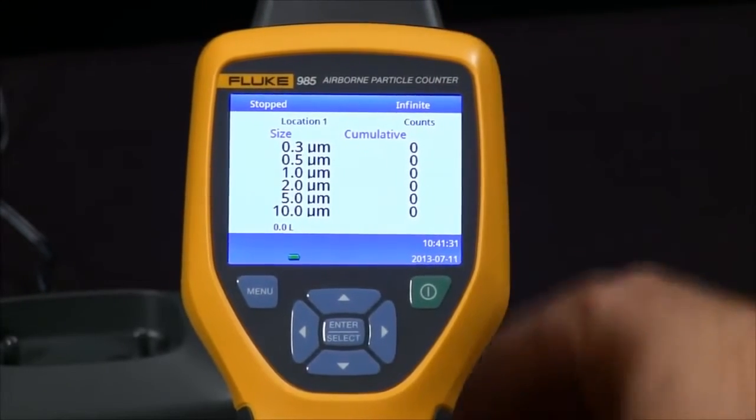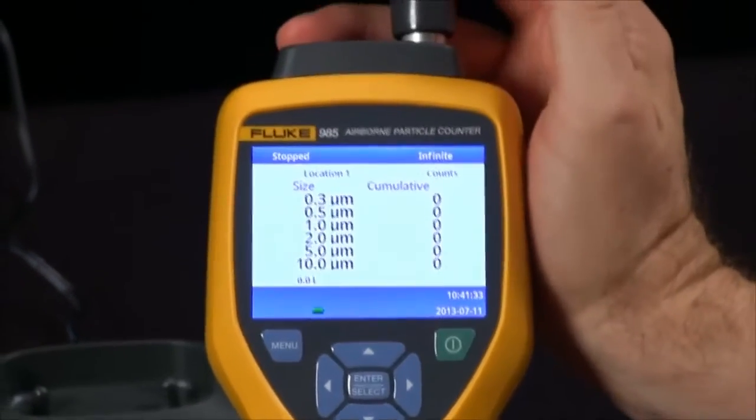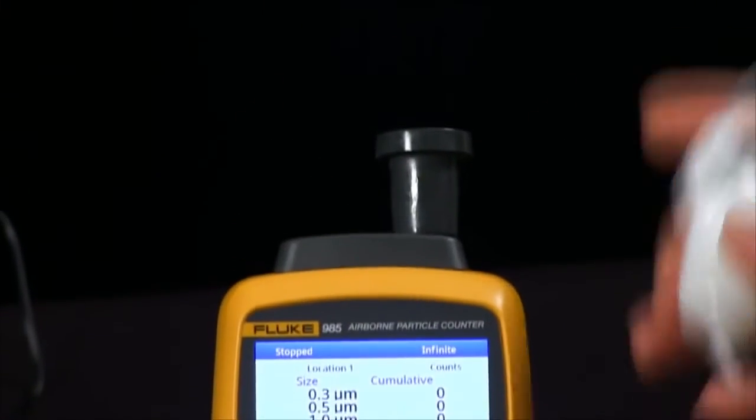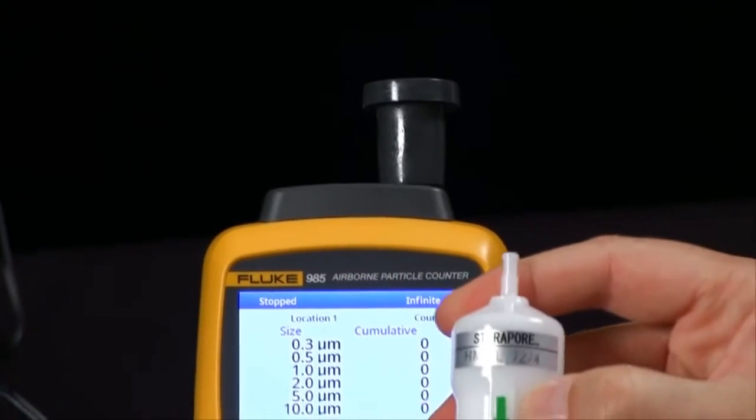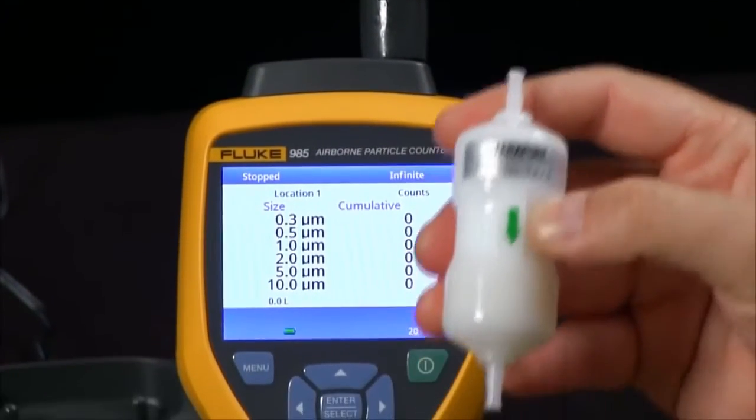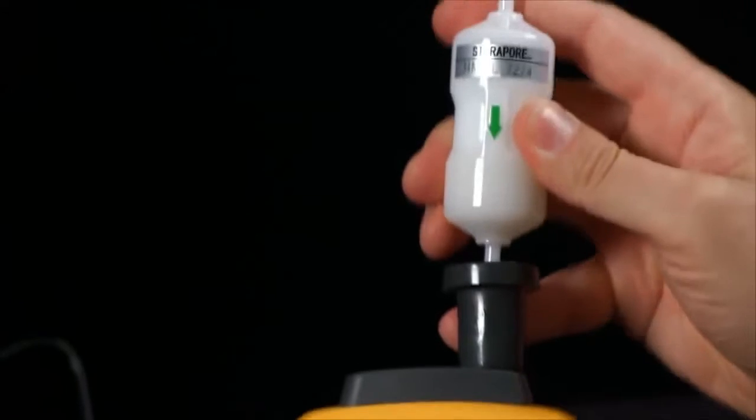To establish a baseline, we provide an adapter which goes over the sample port and a zero pass filter. You will see the direction of air flow is indicated by the green arrow. Simply insert this into the adapter.